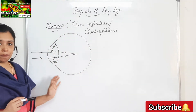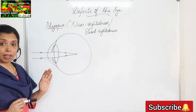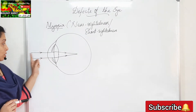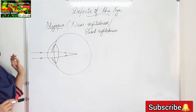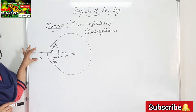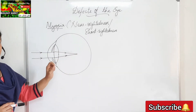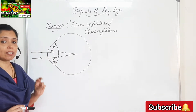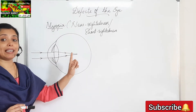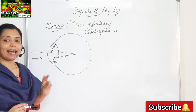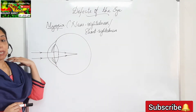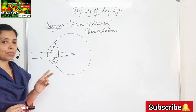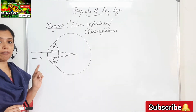You will be given a diagram and asked to identify the defect. Look at the diagram carefully — light rays are coming from a distant object, that is why the rays are parallel. The image is falling in front of the retina, so confirm it is myopia. The two reasons are: eyeball lengthened from front to back, and lens has become too convex. It can be corrected by using a concave lens.